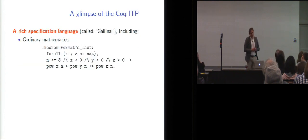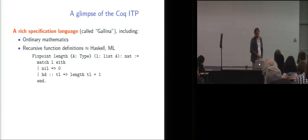So let me give you a glimpse of one of those interactive theorem provers, the Coq system, that I'm going to use in a demo in a second. So it gives you a rich specification language called Gallina that includes ordinary mathematics, you know, with the usual connectives and quantifiers, conjunction, implication, for all quantification. It also makes it possible to define recursive function definitions, pretty much like you do in Haskell or ML. So this is the definition of the length of a list as a recursive function, so fixed point means recursive function and pattern matching on the shape of the list.